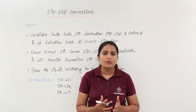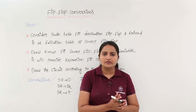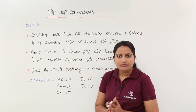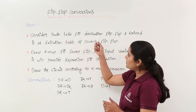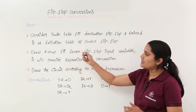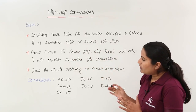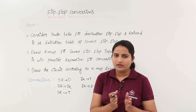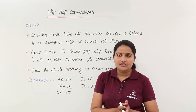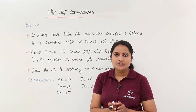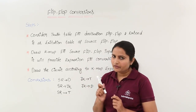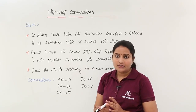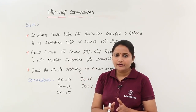In this class we are going to start flip-flop conversions — that means how we are going to convert one type of flip-flop to another type of flip-flop. The steps to convert one type of flip-flop to another are: consider the truth table for the destination flip-flop and extend it as the excitation table of the source flip-flop. To understand this topic, you first need a solid knowledge of truth tables and excitation tables.